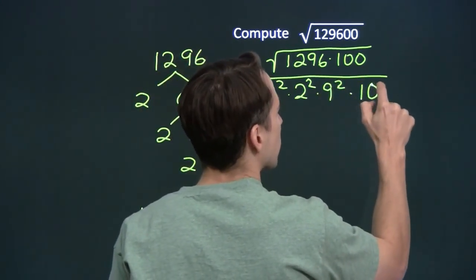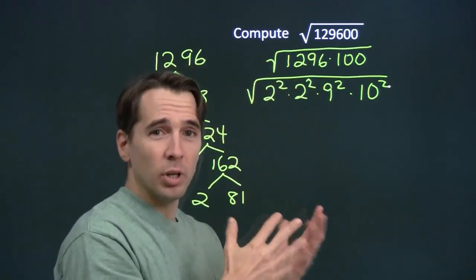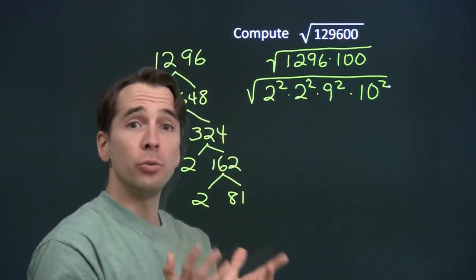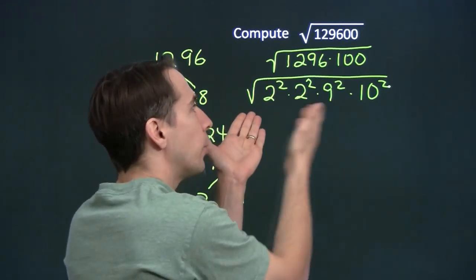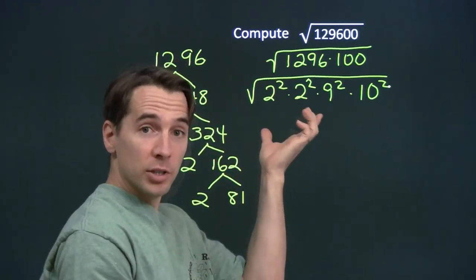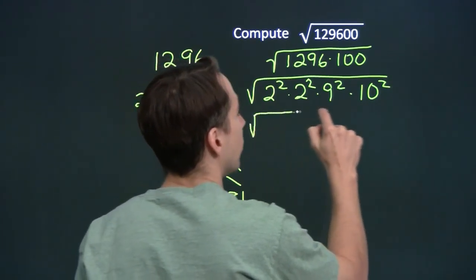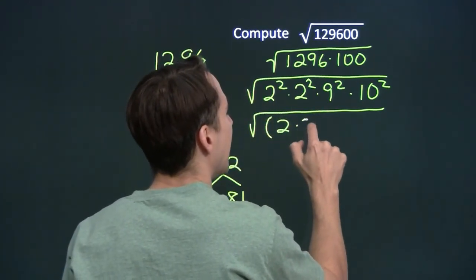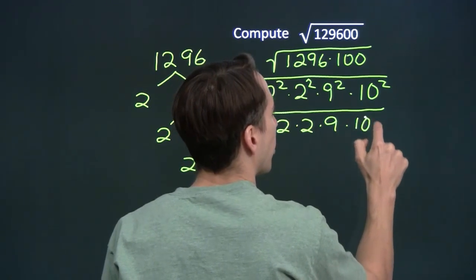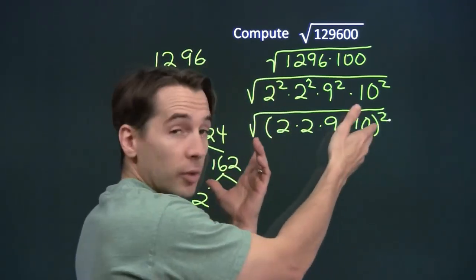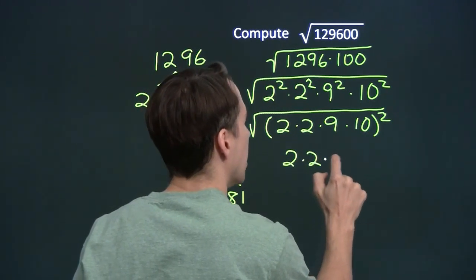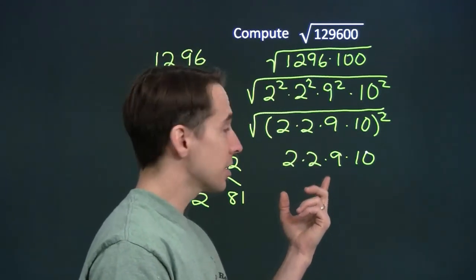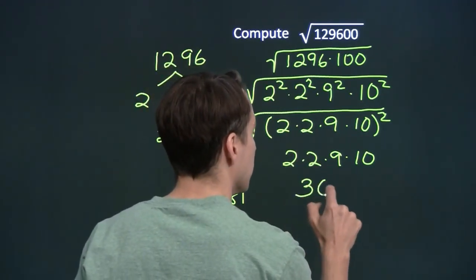And of course 100 is 10 squared. Whenever I have a number I'm taking the square root of and I don't know it off the top of my head, I can use prime factorization and look through the factors for perfect squares. Hopefully we can write the number as a product of perfect squares, just like we did here. We write this product of perfect squares as the square of a product, and we know how to take the square root of a perfect square. We get 2 times 2 times 9 times 10. 2 times 2 is 4, times 9 is 36, times 10 is 360.